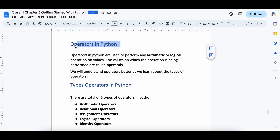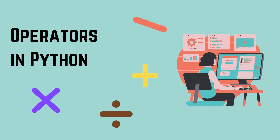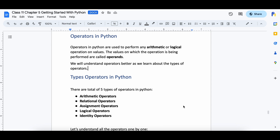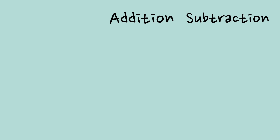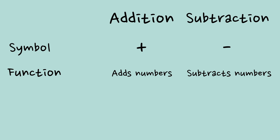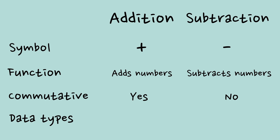Now let's talk about a concept in Python called operators. Operators in Python are very similar to how mathematical operators work. Let's take addition and subtraction as an example. Each operator in math has a symbol, like we have the plus sign for addition and minus sign for subtraction. Each operator performs a specific function — addition operator adds numbers and subtraction operator subtracts numbers. Each operator may be commutative or may not be commutative. Like in case of addition, for any two numbers a and b, a plus b will always be equal to b plus a. But in the case of subtraction, a minus b will not be equal to b minus a. Each operator may work on a variety of data, like addition and subtraction in math can work on whole numbers, integers, decimals and all real numbers.